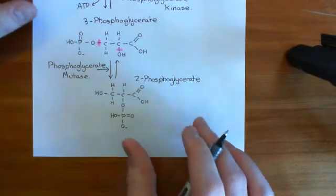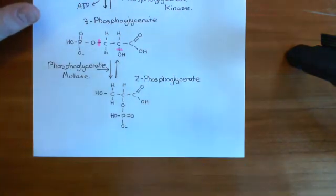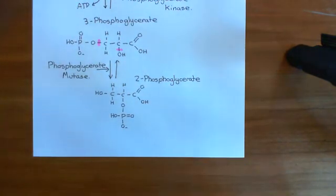The 2-phosphoglycerate will then go on to form phosphoenolpyruvate, but we'll discuss that in the next video.